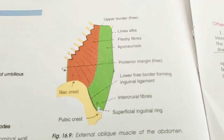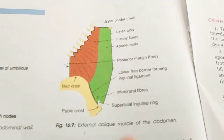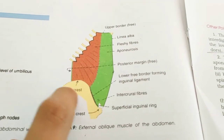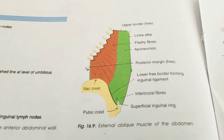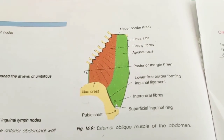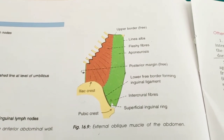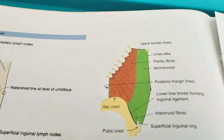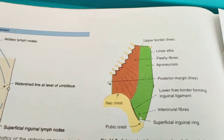The lower fibers of the muscle are inserted directly into the anterior two-thirds of the outer lip of the iliac crest — you can see the lower fibers are directly attached to the iliac crest here. What is the nerve supply? The external oblique muscle is supplied by the lower six thoracic nerves.